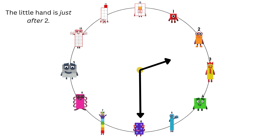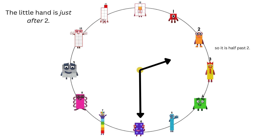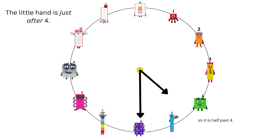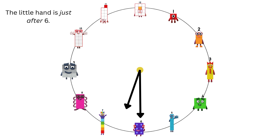The little hand is just after two, so it is half past two. The little hand is just after three, so it is half past three. The little hand is just after four, so it is half past four. The little hand is just after five, so it is half past five. The little hand is just after six, so it is half past six.